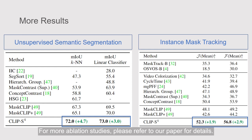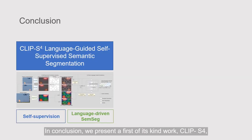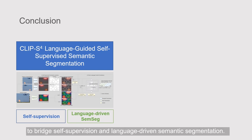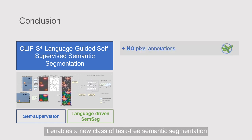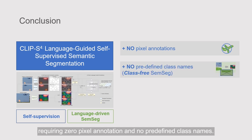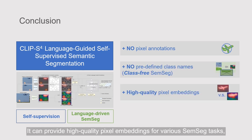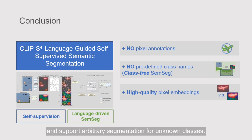For more ablation studies, please refer to our paper for details. In conclusion, we present a first-of-its-kind work, CLIP-S4, to bridge self-supervision and language-driven semantic segmentation. It enables a new class of task-free semantic segmentation requiring zero pixel annotation and no predefined class names. It can provide high-quality pixel embeddings for various semantic segmentation tasks and support arbitrary segmentation for unknown classes.